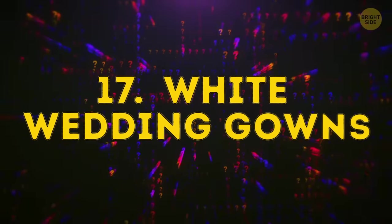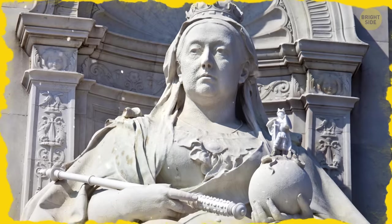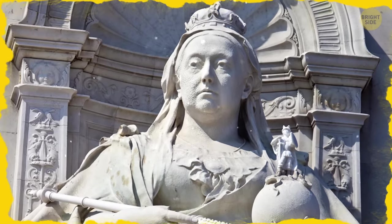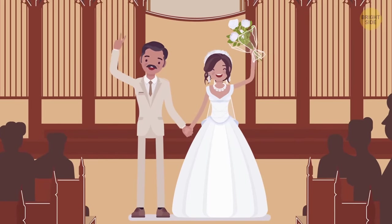White wedding gowns. Believe it or not, white dresses were for mourning until Queen Victoria, one of history's first style influencers, wore a white dress at her wedding and changed tradition forever.